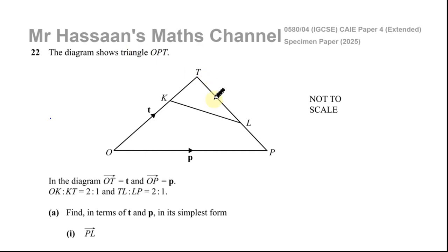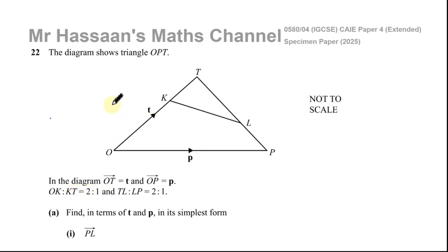It says the diagram shows triangle O, P, T. The vector from O to T is denoted by t, and O to P is a vector p. Now O to K: the ratio O to K to K to T is 2 to 1, so this is two parts and this is one part — three parts altogether. And T to L to L to P is also 2 to 1.